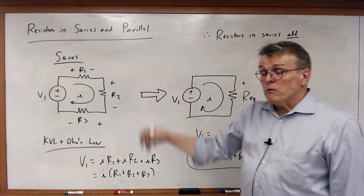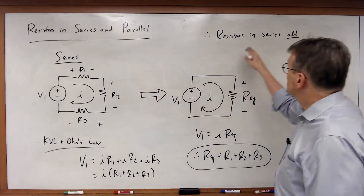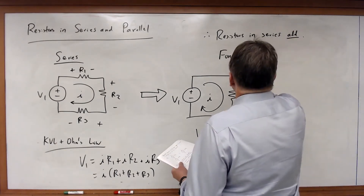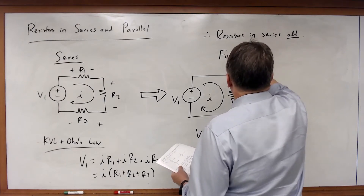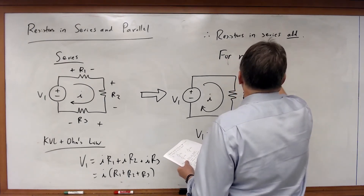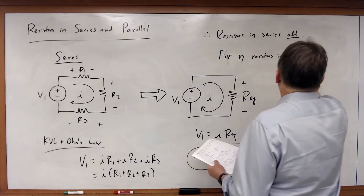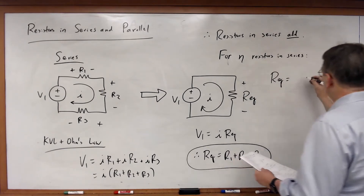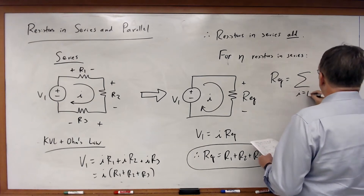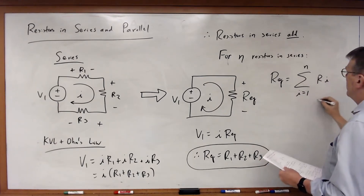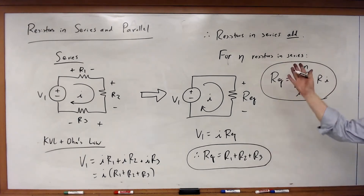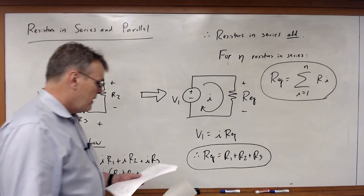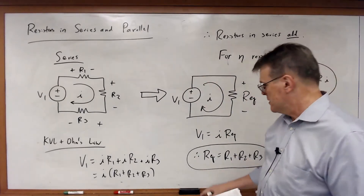This works for any number of resistors. For N resistors in series, the generalized equation is REQ equals the sum from i equals 1 to N of R-sub-i. We just add together however many resistors we have. That's pretty easy to prove mathematically. Now let's look at parallel combinations of resistors.